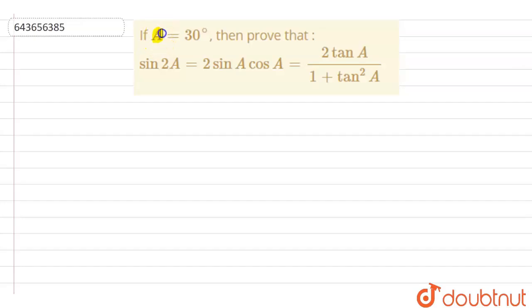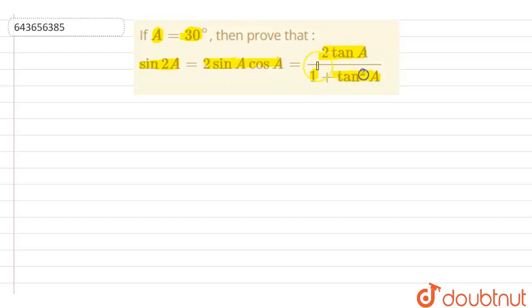Here the question is: if a equals 30 degrees, then prove that sin(2a) equals 2sin(a)cos(a), and this equals 2tan(a) divided by 1 plus tan²(a).